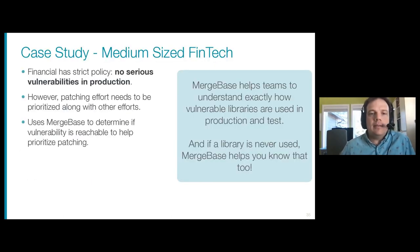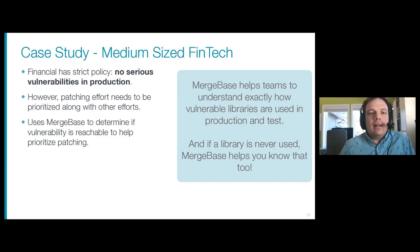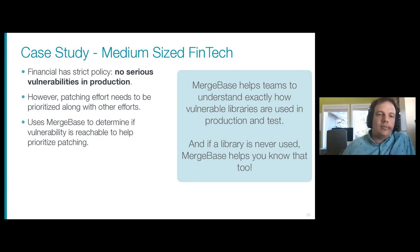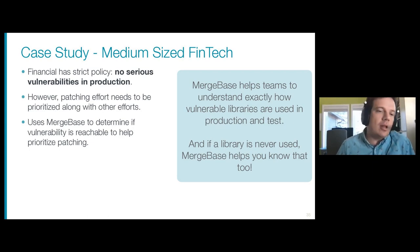Diving into a case study: a company had a policy of no serious vulnerabilities in production. To pull that off, you need to patch your libraries. They wanted additional data to help prioritize a patching effort, so they used MergeBase to determine if the vulnerability is reachable — meaning normal system behavior passes through the vulnerable section of the code. Reachable vulnerabilities were prioritized, whereas unused libraries or libraries where the vulnerable section is not executed during normal system operation were considered lower priority. MergeBase with runtime telemetry provides that data. In some cases, the library was never used at all, helping the customer realize they could remove it entirely.